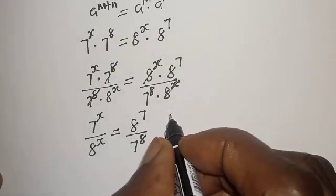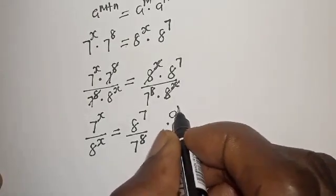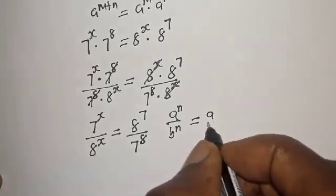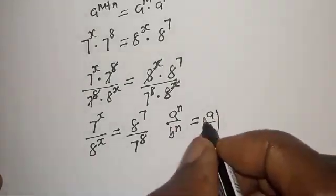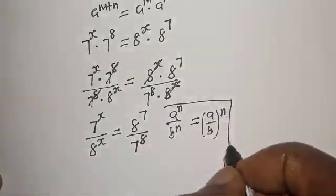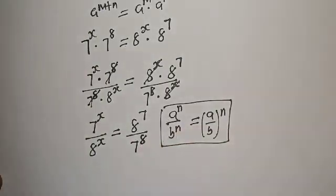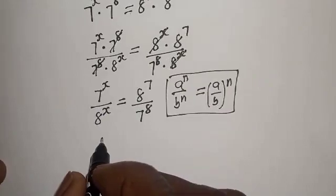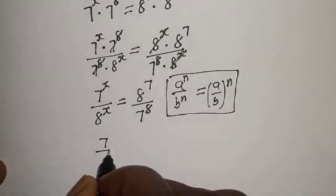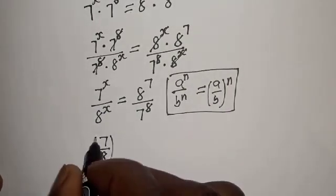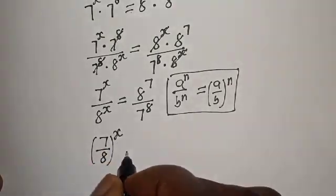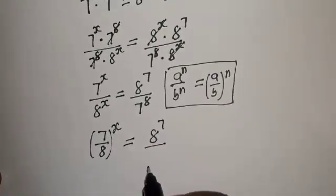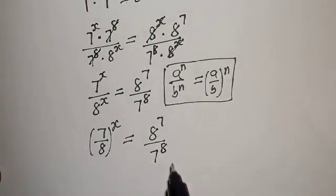Note that if you have A raised to power N over B raised to power N, this is equal to A over B, all raised to power N. Then 7 raised to power x over 8 raised to power x can be written as 7 over 8, all raised to power x, is equal to 8 raised to power 7 divided by 7 raised to power 8.